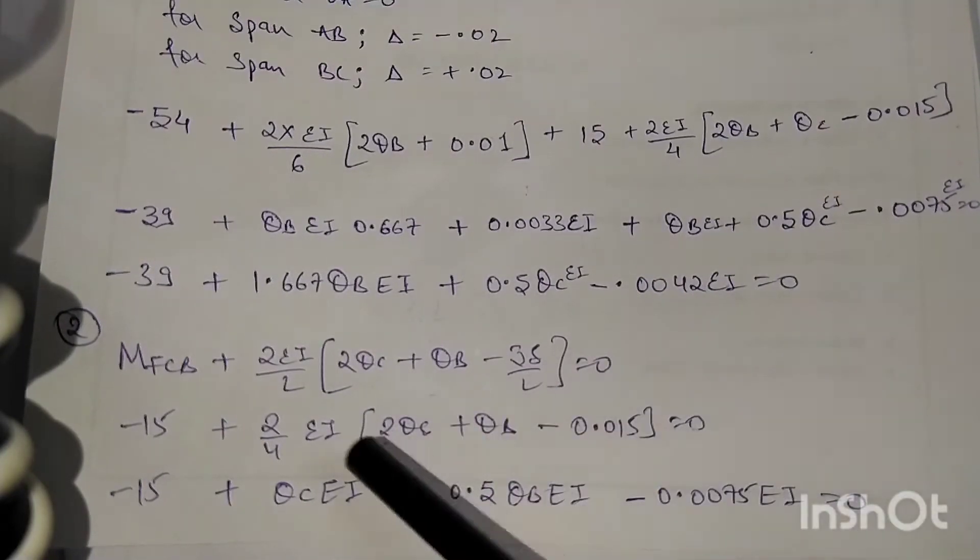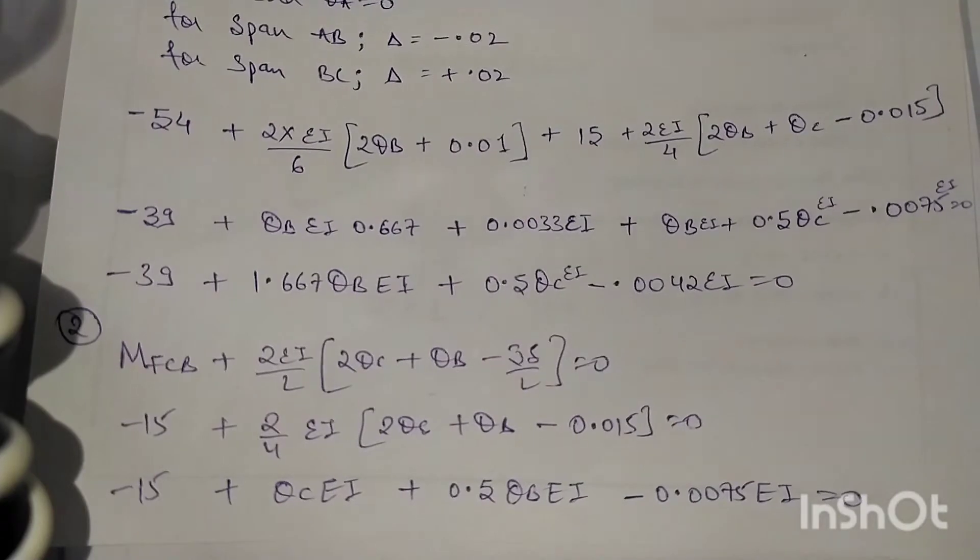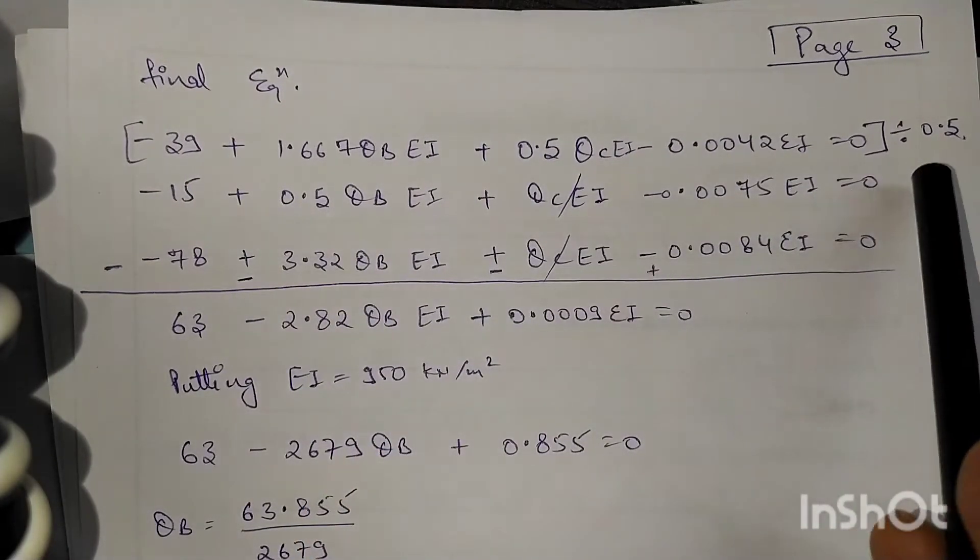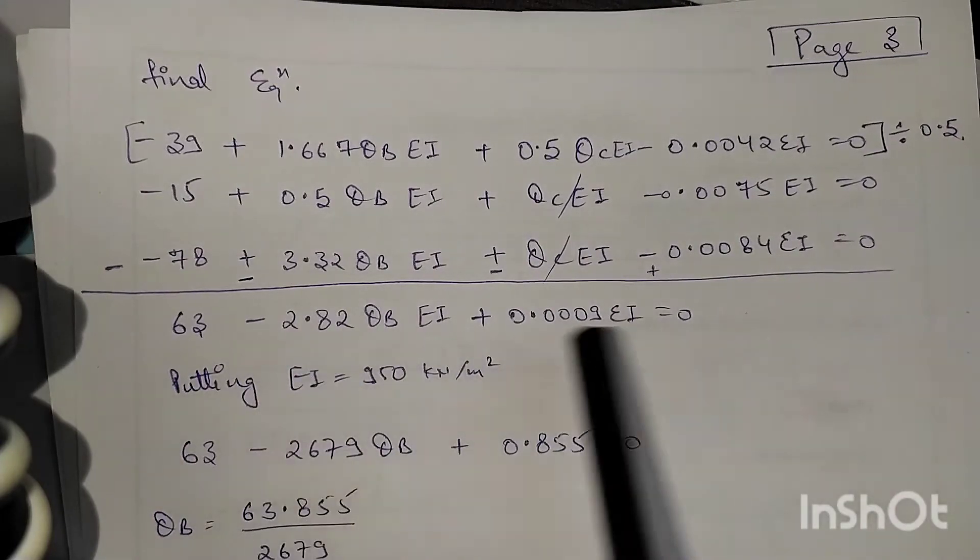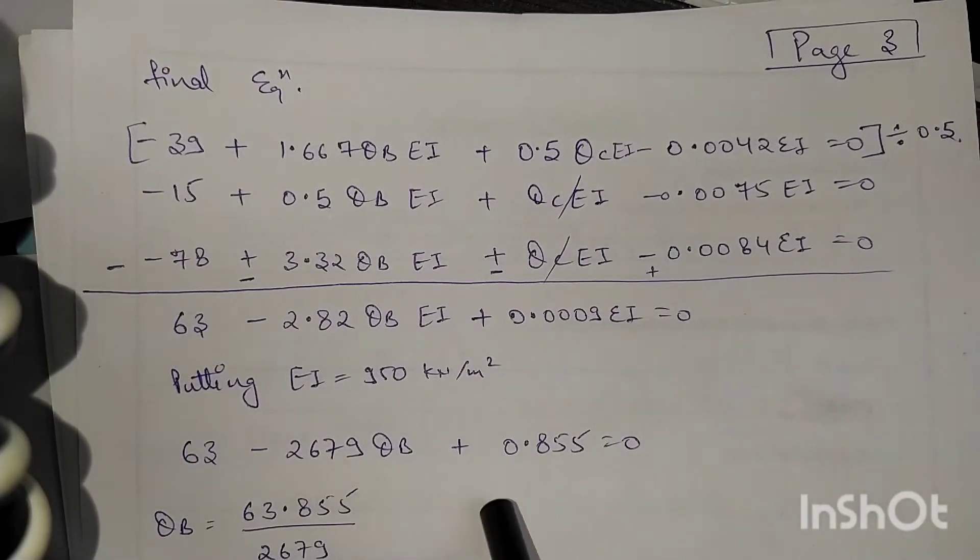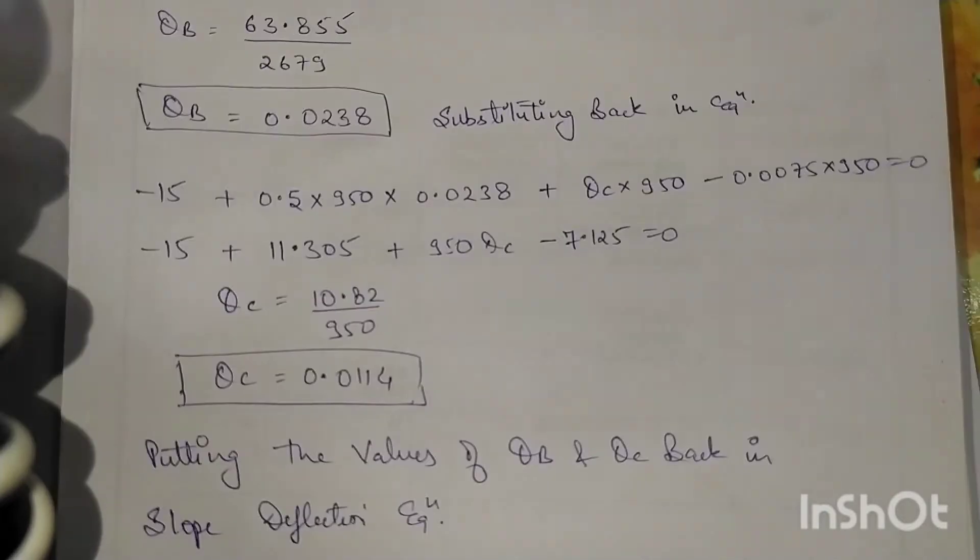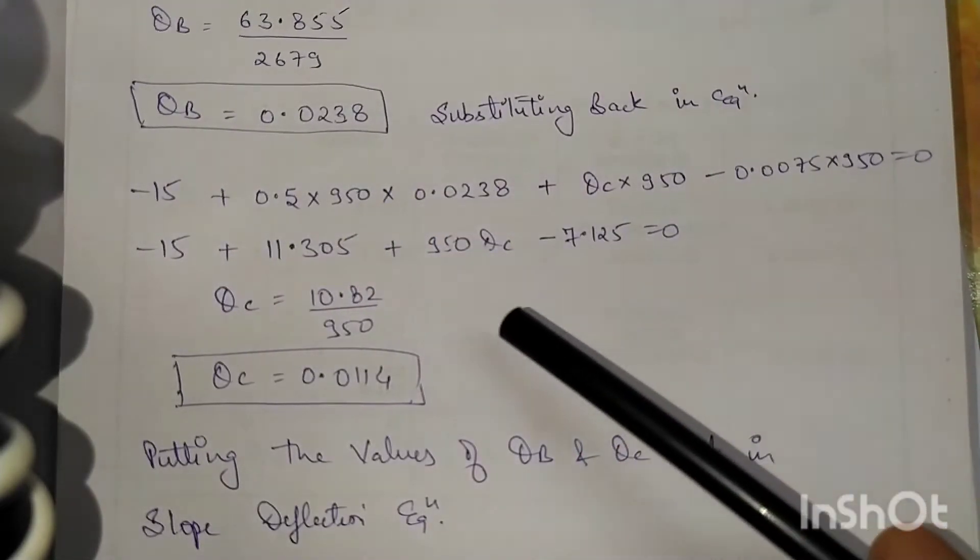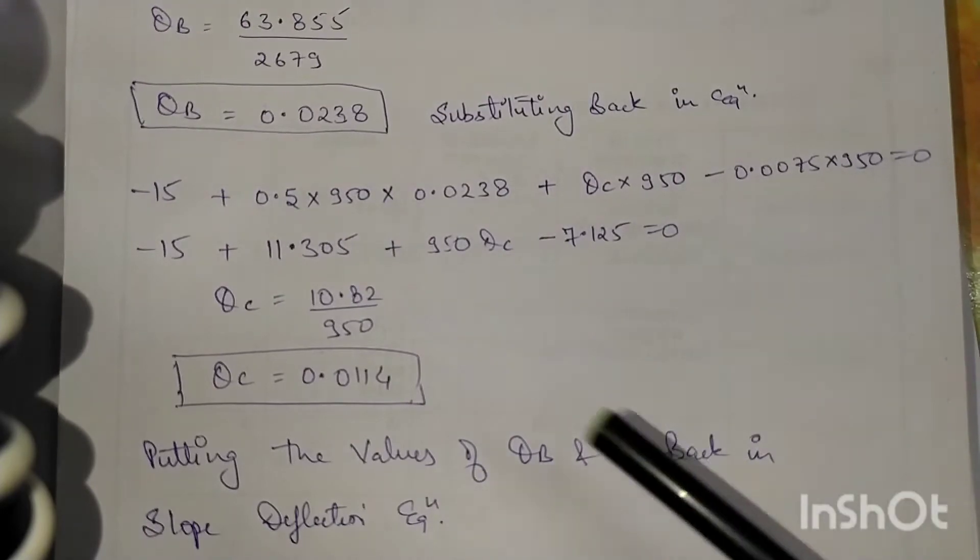Next is MCB, so we have taken MCB is equal to zero. We have substituted all the values so that we finally get two equations. In these two equations we have theta B, theta C unknown. We have substituted the value, calculated it, and found out the final answer for theta B.